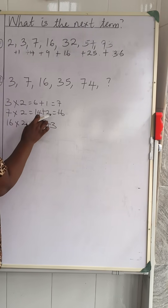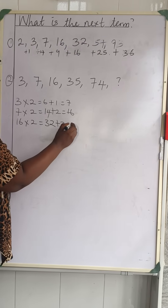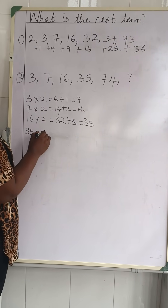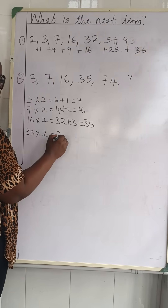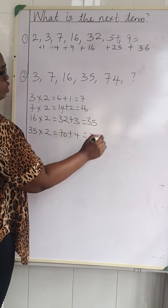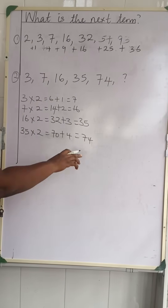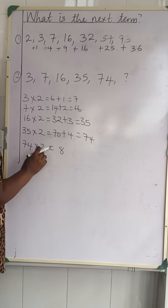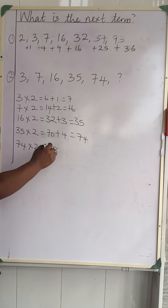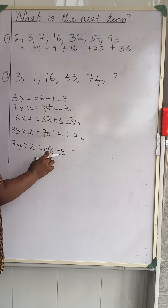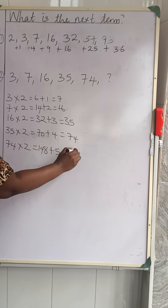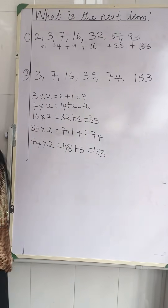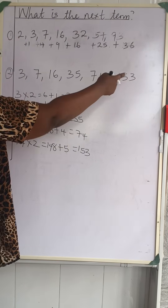So for 35: 35 times 2 is 70, and 70 plus 4 is 74 — that's what we have. So the pattern is: multiply by 2, then add an incrementing value (1, 2, 3, 4...). Now for the next term: 74 times 2 is 148. We add 5: 5 plus 8 is 13, carry the 1; so we get 153. Our next term is 153.